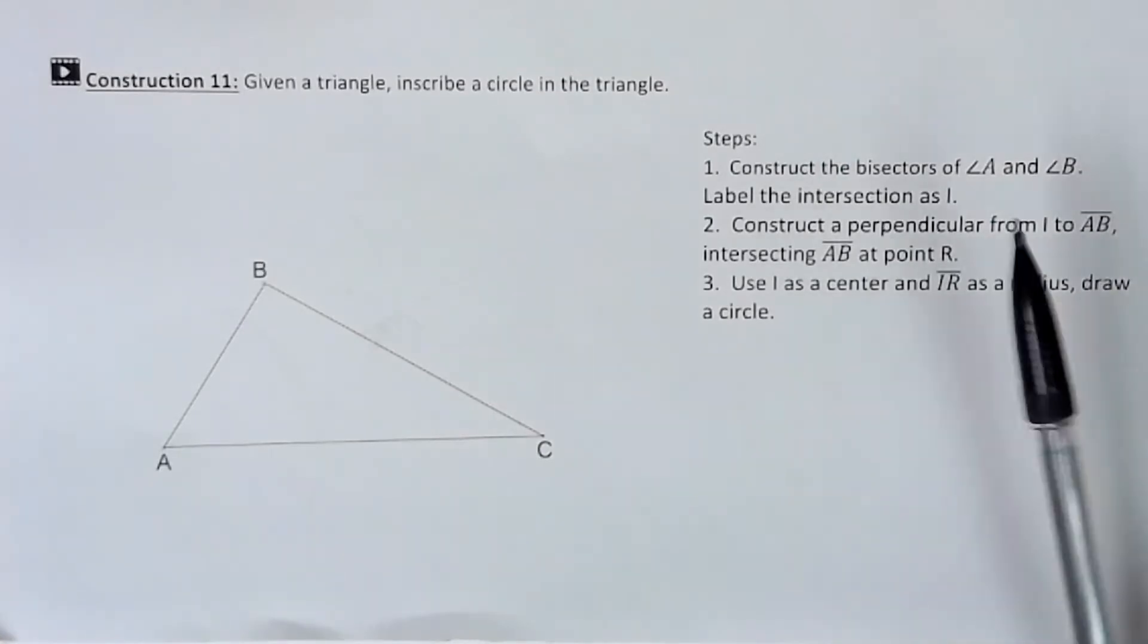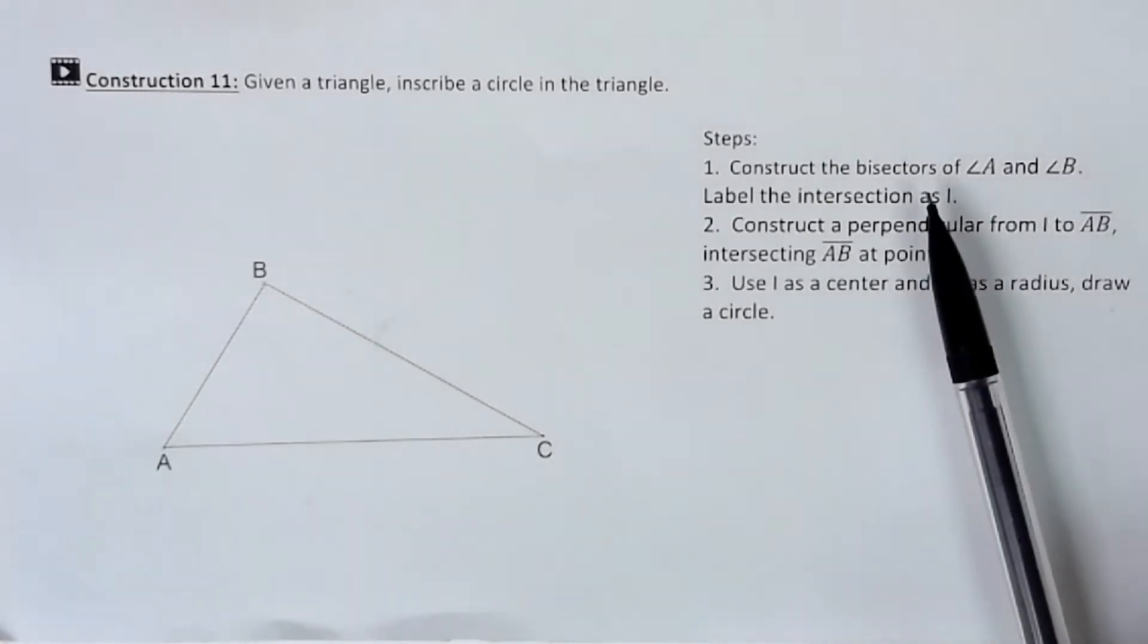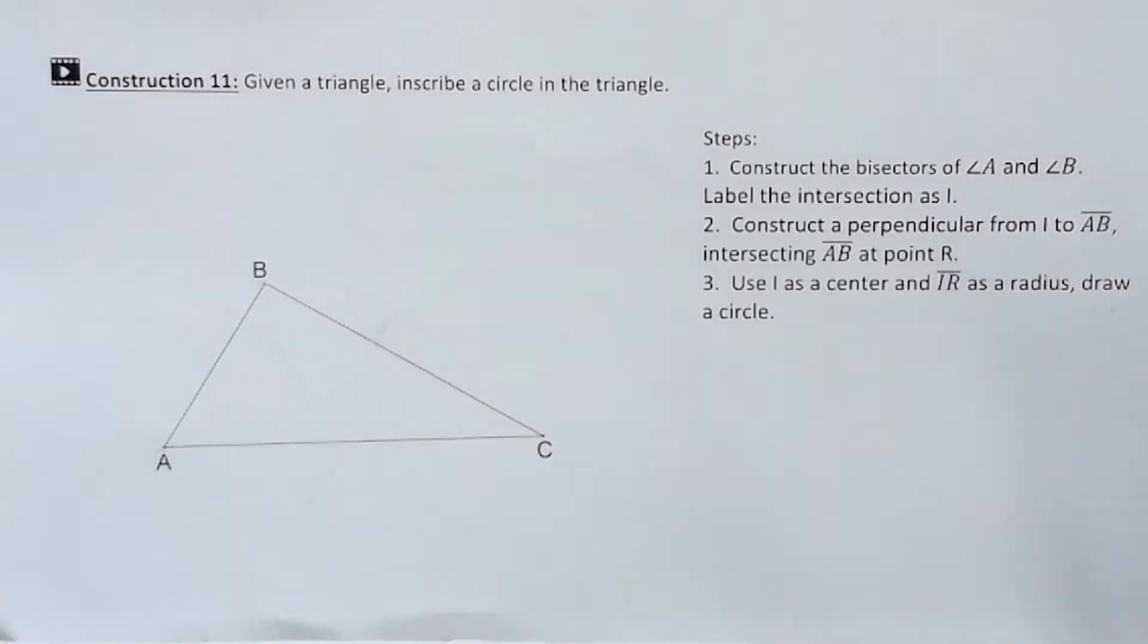So first things first, we're going to go ahead. We need to find at least two angle bisectors in order to get our in-center point. You could find all three if you wish to make sure you're super accurate. I'm going to go ahead and find the angle bisectors of A and B.